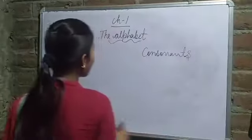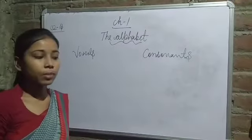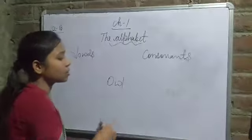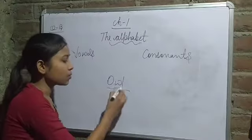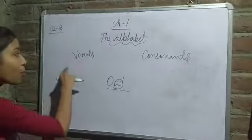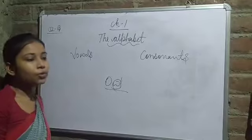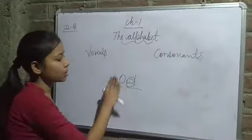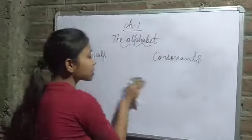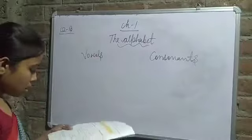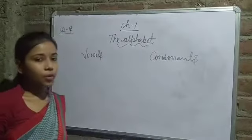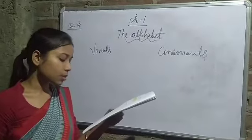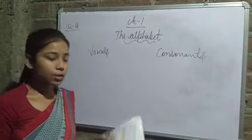The correct pronunciation is 'vowels', not 'walls'. You have learned that the letters A, E, I, O, U are vowels. I have already told you about this. In our English alphabet, the other 21 letters are called consonants. Look at these words.